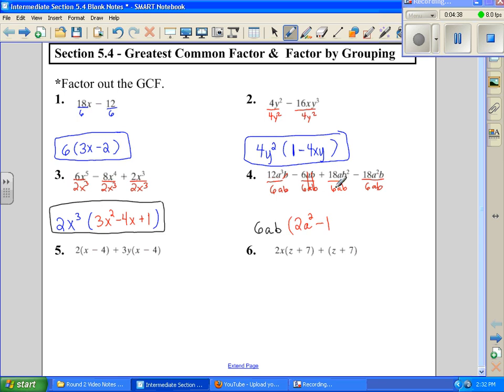And then I'm going to move to the next term. 18 divided by 6 is going to be 3. a's cancel. I have a b left over in the top. And then my last term, -18 divided by 6 is -3. I have an a left, and b's cancel out. So this would be the factored form.